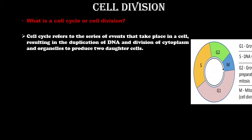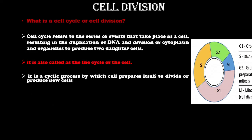For cell division, there is a requirement for the duplication of DNA so that we get two genetically similar daughter cells. The cell cycle is also called the life cycle of the cell — it's a cyclic process by which a cell prepares itself to divide or produce new cells. From G1 phase, it goes to S phase, then G2 phase, then the mitotic phase, after which daughter cells re-enter G1 phase.